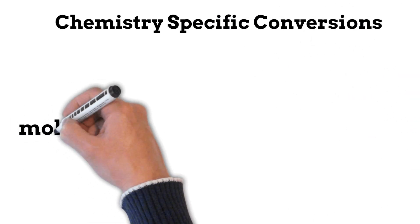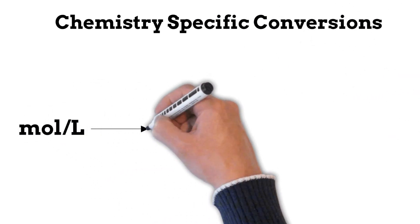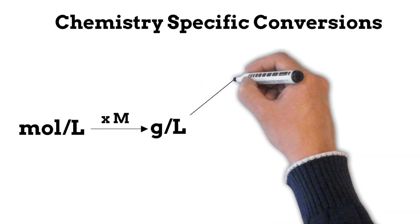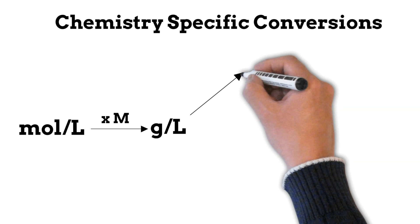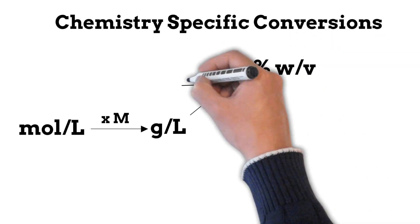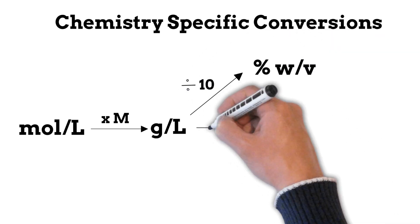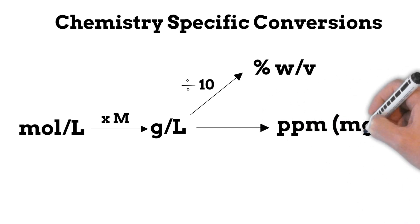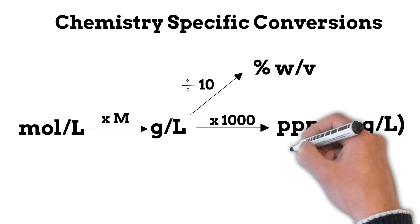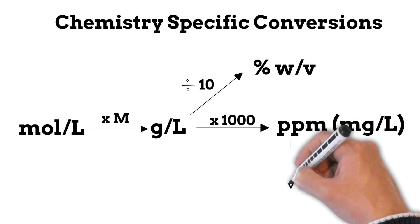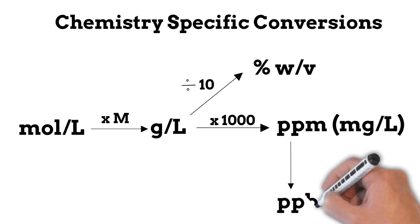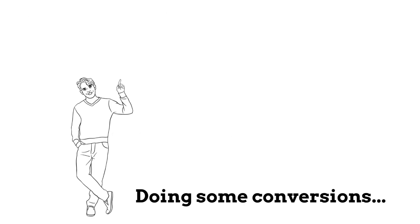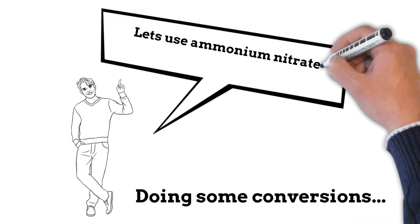Some chemistry-specific conversions: moles per liter can be converted to a number of different units. If you want to go to grams per liter, times by the molar mass. If you want to convert grams per liter into percentage weight per volume, divide by 10. If you want to convert it into parts per million — which is milligrams per liter — times by a thousand. And if you want to convert parts per million to parts per billion, times by another thousand.